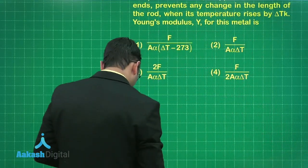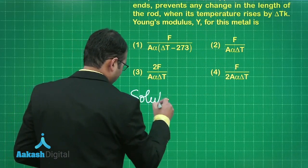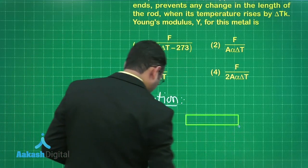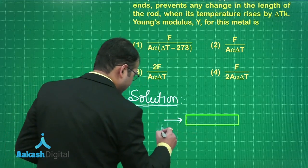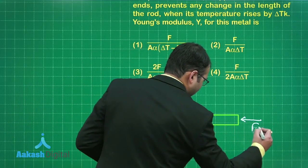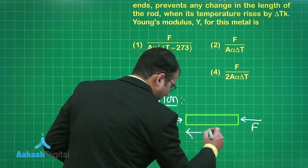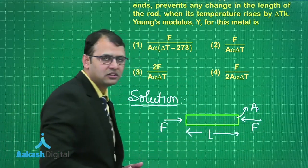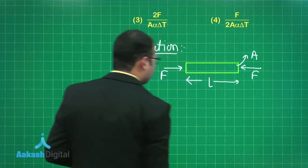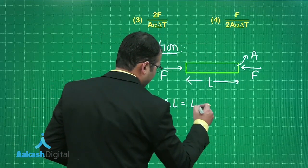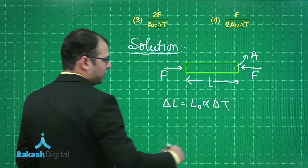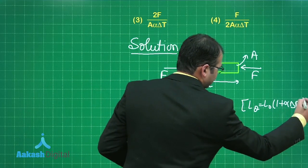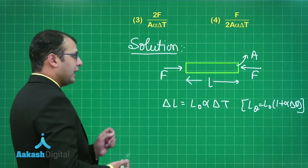Let me first write the solution. So let's take this as our rod, then force F is being applied on it, and this length is L with cross-sectional area A. When we increase this temperature, the length should increase, and that increase in length ΔL should be equal to L₀αΔT as we are well aware. Due to this equation Lθ equals L₀(1 + αΔθ), you are well aware of this equation.